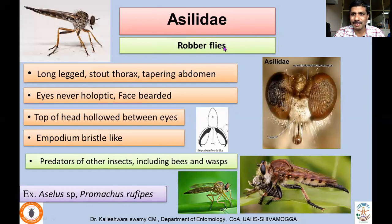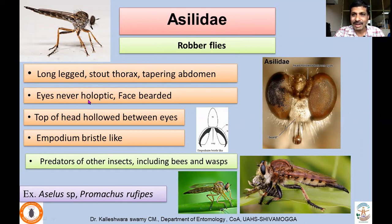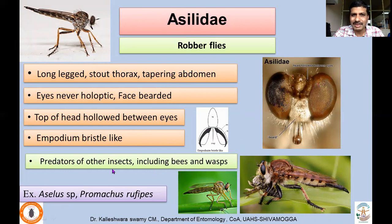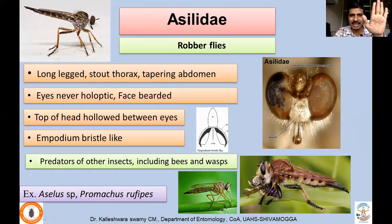Next, family Asilidae — robber flies. They are long-legged with a stout thorax and tapering abdomen. Eyes are never holoptic. The face is bearded — hairy — whereas in Tabanidae the face was not hairy. The top of the head is hollowed between the eyes. Empodium is bristle-like, as opposed to the pulvilliform empodium in Tabanidae. Most asilids are predators on other insects including bees and wasps — they alight on tree trunks and capture prey using well-developed legs. Examples include Asilula species and Promachus rufipes.